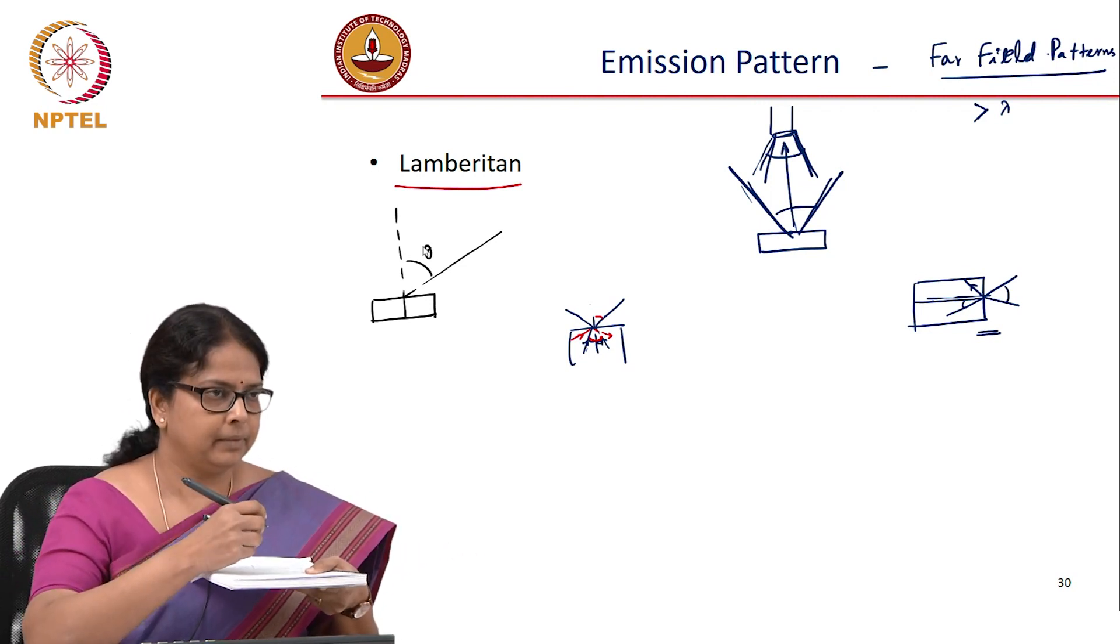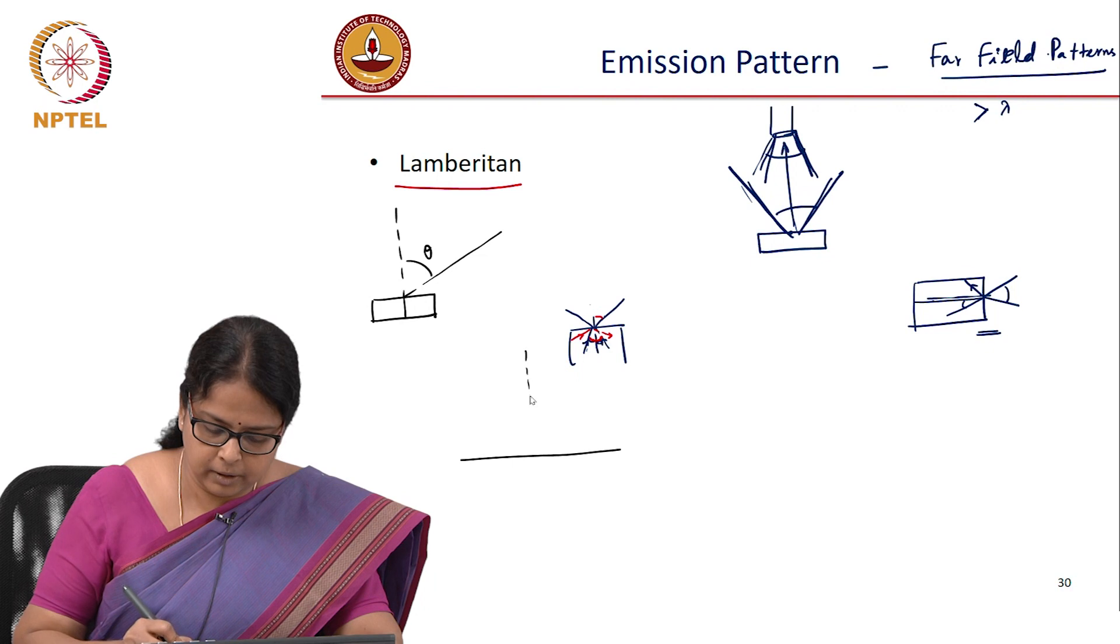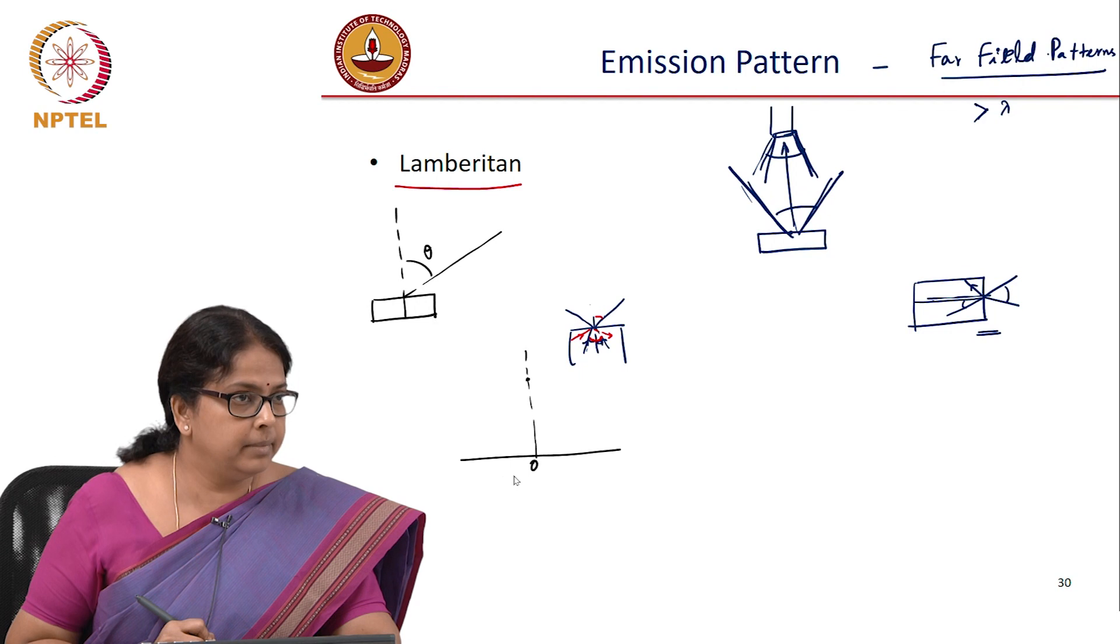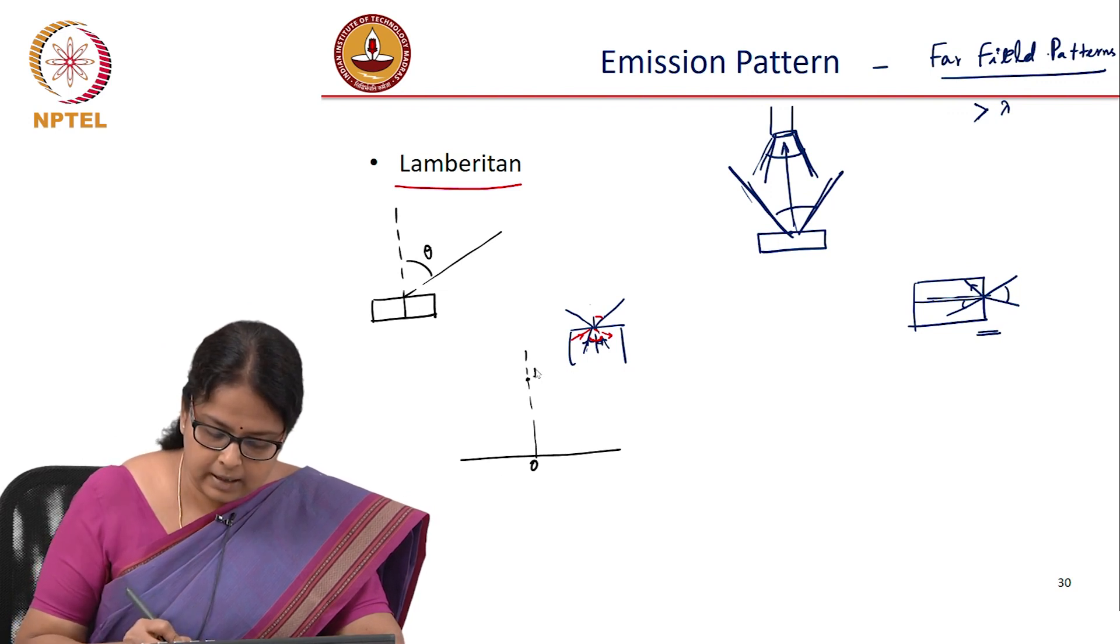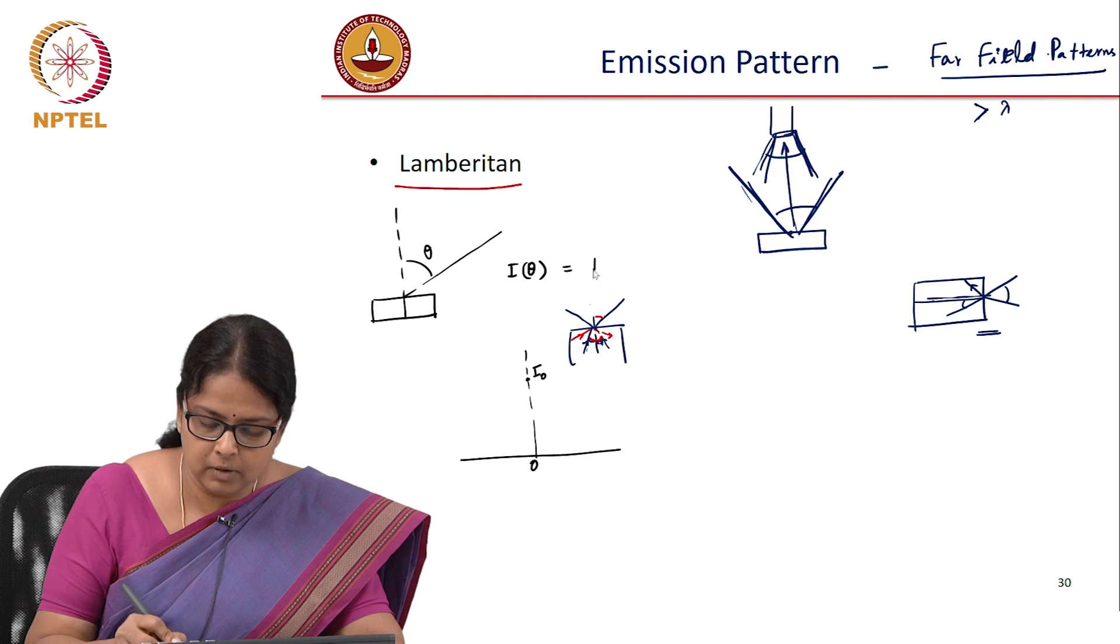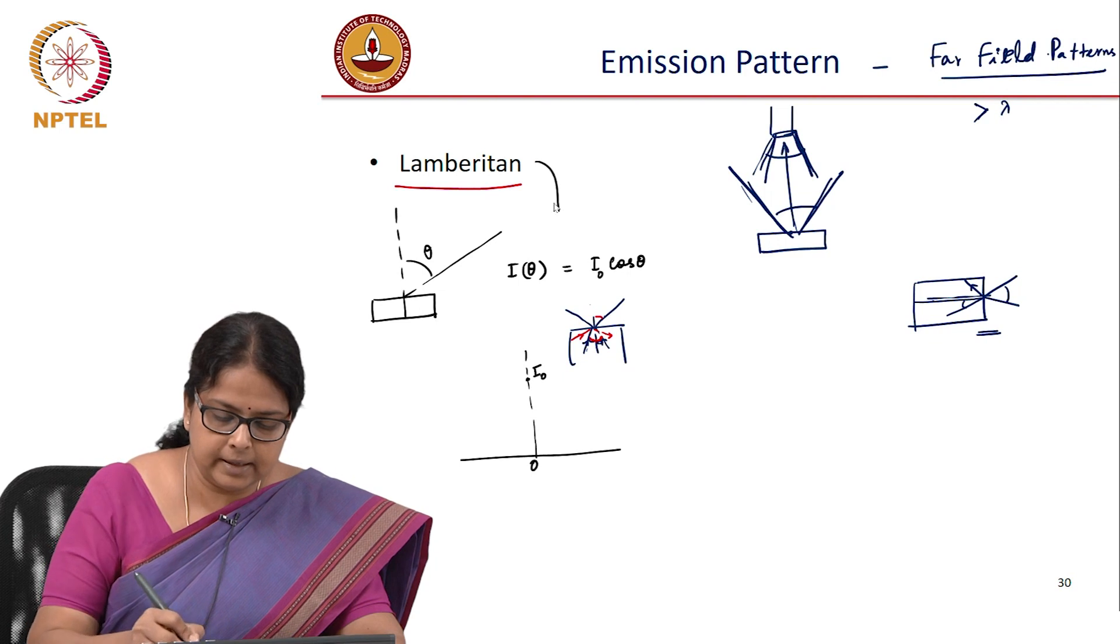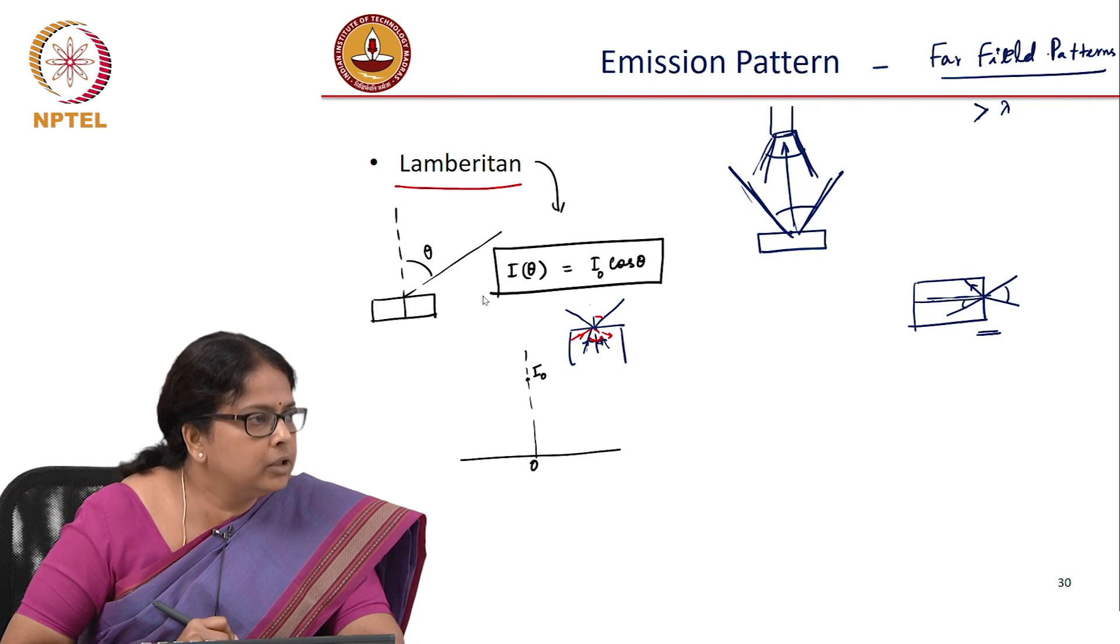If I am making a plot of the emission, emission is maximum obviously at theta equal to 0 because the refraction is minimum there, the Fresnel reflection is also minimum there. If this I call as I naught, the intensity at maximum and if I at any angle is equal to I naught cos theta, then it is a Lambertian source. A Lambertian source is the one where I at theta is I naught cos theta.